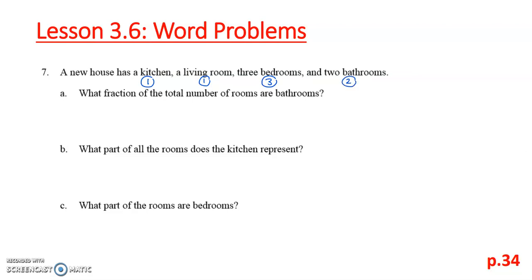Part A. What fraction of the total number of rooms are bathrooms? Okay, well, first up, we have to add all of our rooms together. So one plus one is two, plus three is five, plus two is seven. So we have seven total rooms. So that's going to be our denominator for question A. So the total number of rooms are seven, and we have two bathrooms. So two out of the seven are bathrooms.